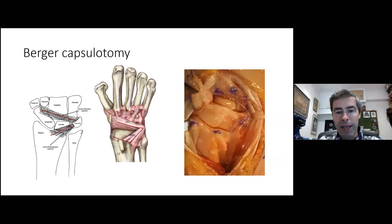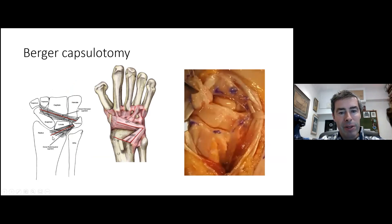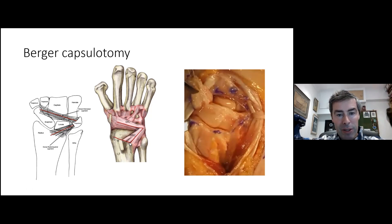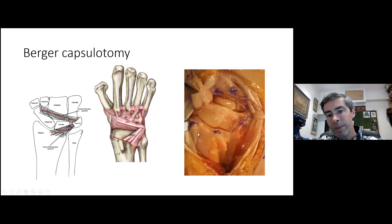The ligament-sparing capsulotomy described by Richard Berger — the Berger capsulotomy — involves deciding how far radial you need to see, then incising the ligaments centrally within the dorsal radiocarpal ligament, with the apex at the triquetrum, and running it distally and radially within the dorsal intercarpal ligament to raise a chevron capsule flap. If you run it along the radius you'll need suture anchors to repair it back on. A photograph from an instructional video shows the distal radius, the proximal carpal row, and the capitate and hamate visible at the edge.